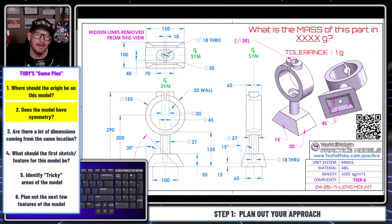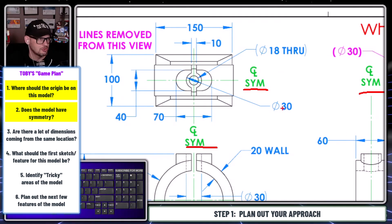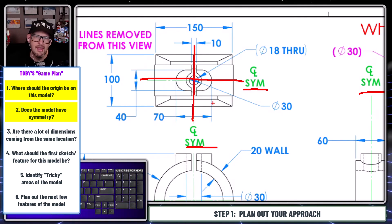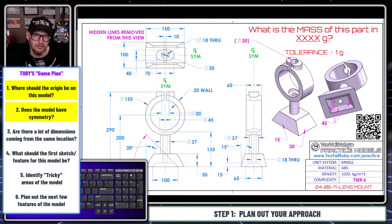A lot of times you'll ask: does the model have symmetry? And you'll use that to help figure out where the origin should be located. In this case the model does have symmetry — whenever we have lines that say 'CL SYM,' that's indicating symmetry. The model has symmetry across this line and this line, which tells me the origin should be located right at the center of that crosshair.